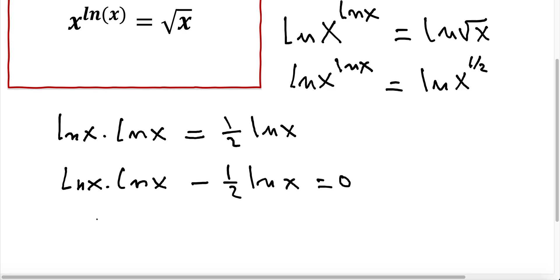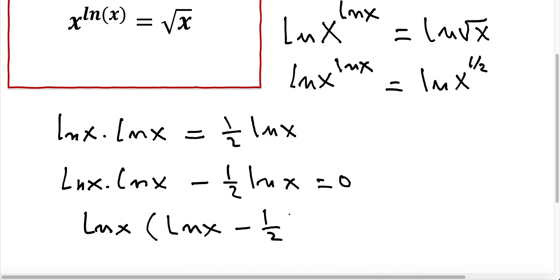Since we have ln x in both terms, we can factor ln x. We write: ln x times (ln x minus 1 and a half) is equal to 0.